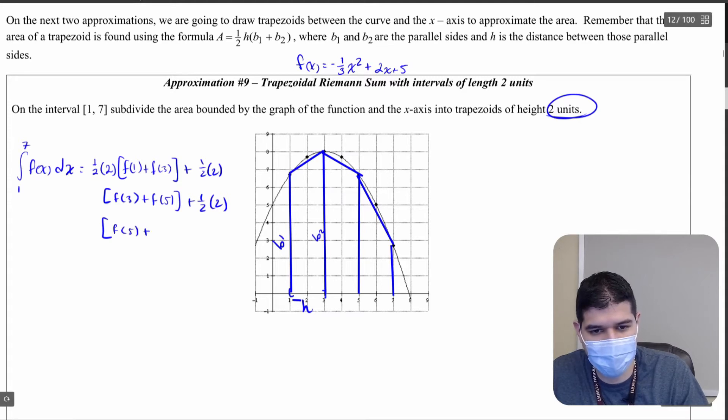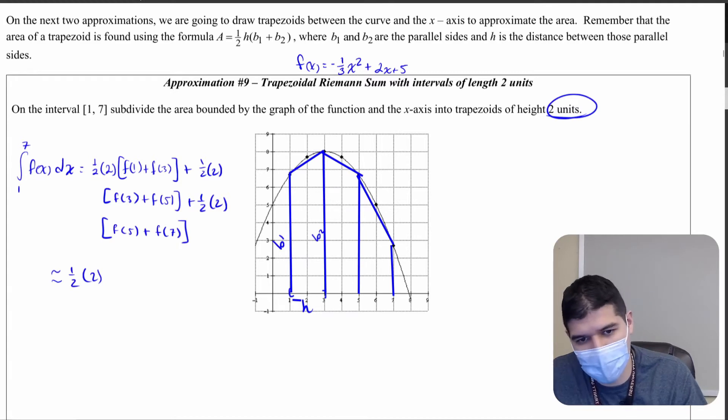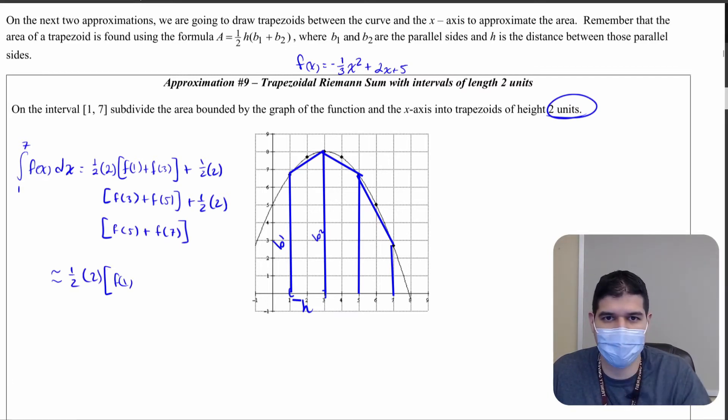And as I simplify this I notice I have a one half times two I can factor out, which is really just one but I'll worry about that later. And then I have one f of one but I have two f of threes. That's that shared side I was talking about, so I want to have two f of threes.